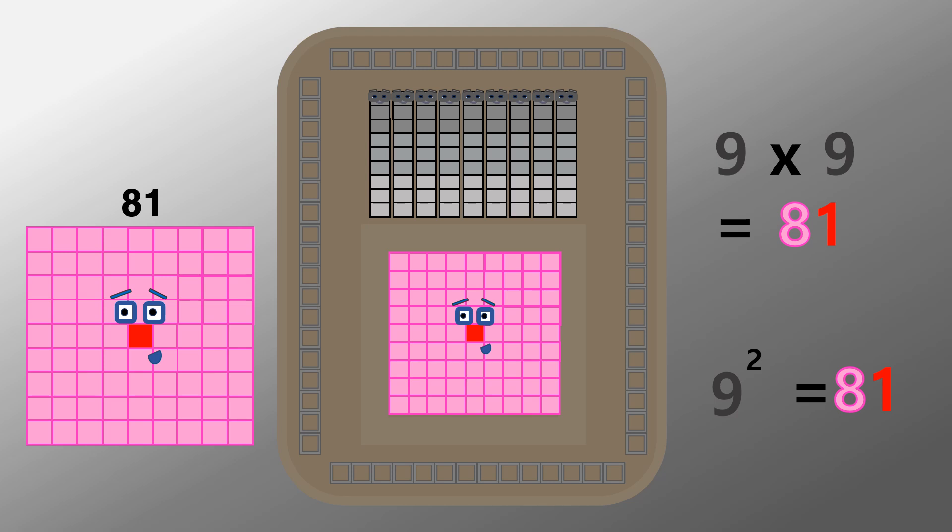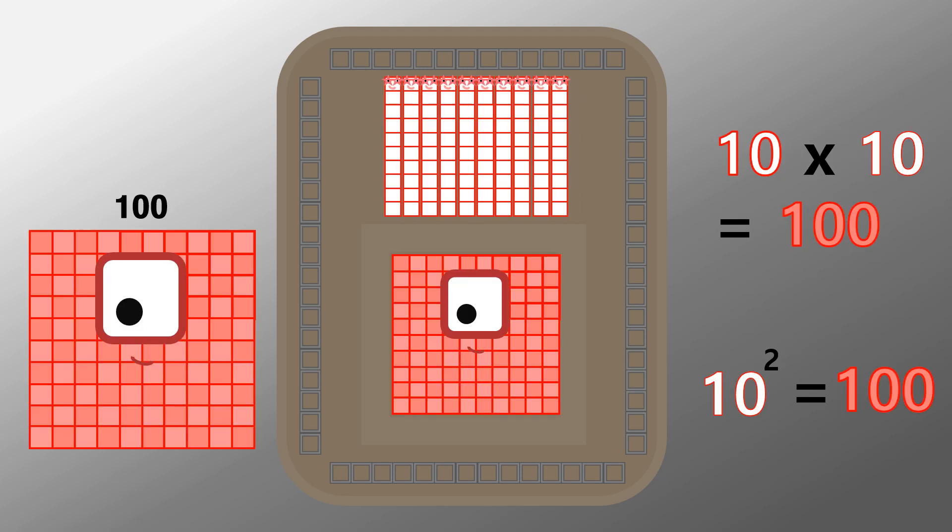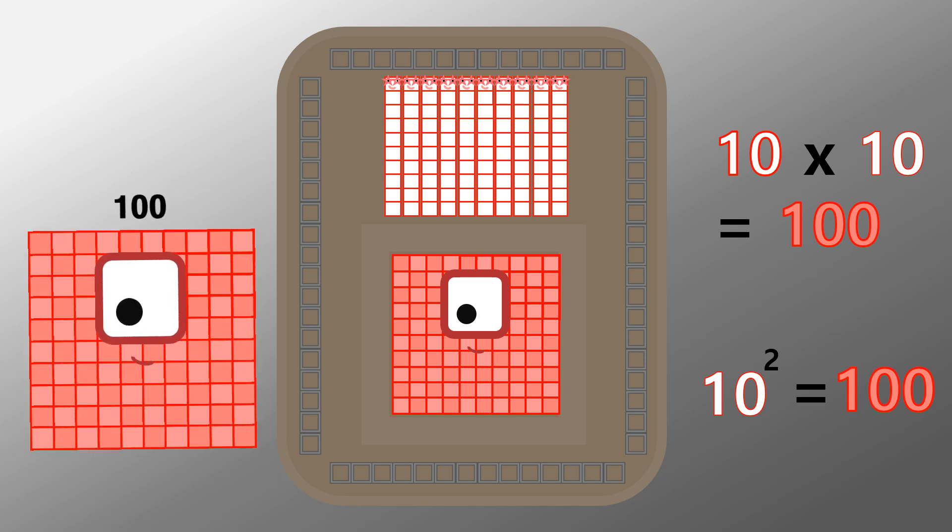I am eighty-one. Nine by nine. Nine across by nine down. I am one hundred. Ten by ten. Ten across by ten down.